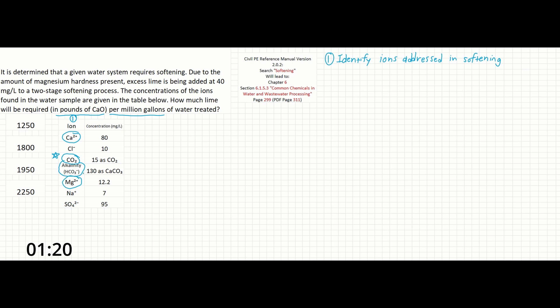Note that while CO2 does not contribute to hardness, it does consume lime and so needs to be accounted for. The ions are given as concentrations in mg per liter. However, the problem is asking us to solve for the amount of lime required in terms of pounds of lime, or calcium oxide, CaO. So, we first need to convert these concentrations into milliequivalents per liter. Let's do this by gathering some more information about each ion.